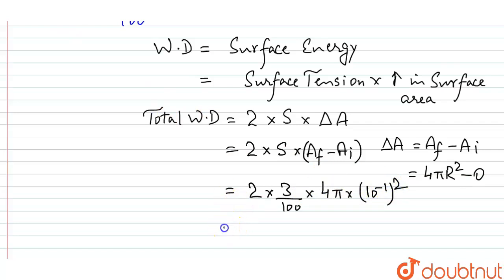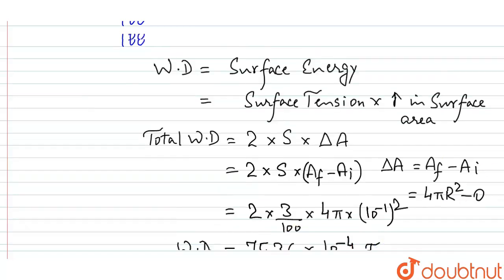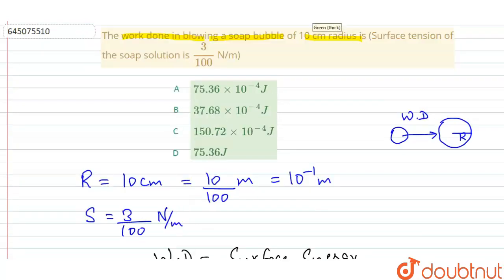Now, on solving this value, I will get 75.36 × 10 to the power minus 4. This will be the total work done in joules. Now from the options, I can take the correct one—that is option number E. Thank you, students.